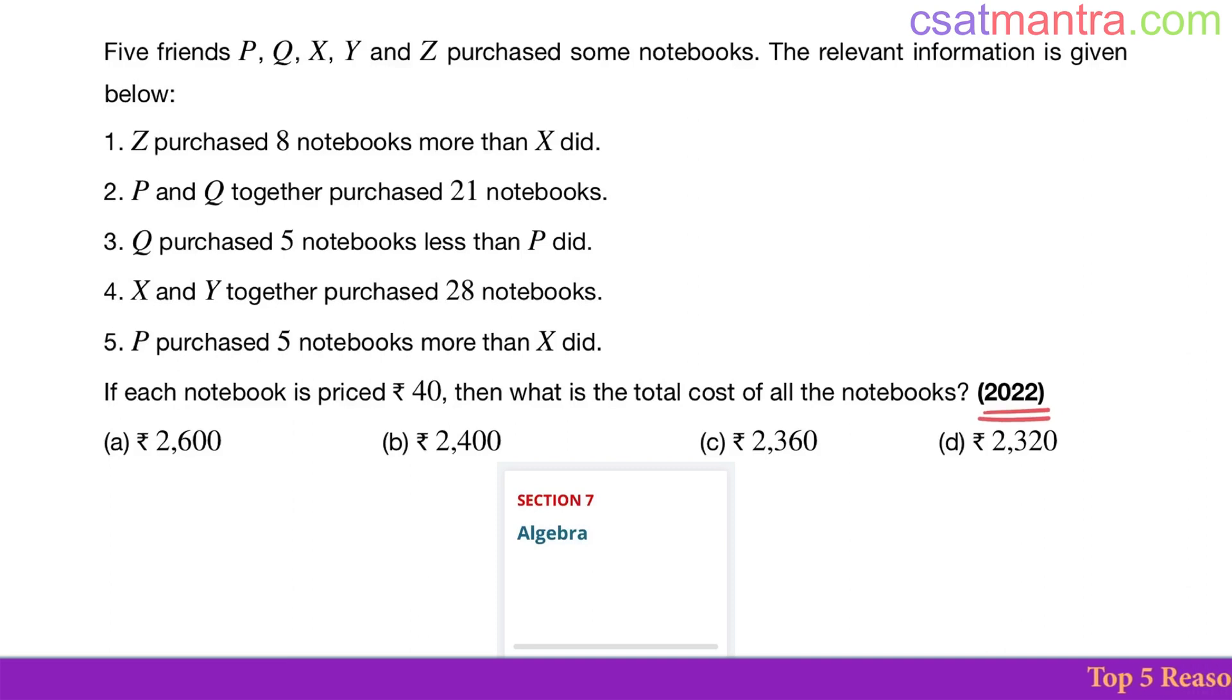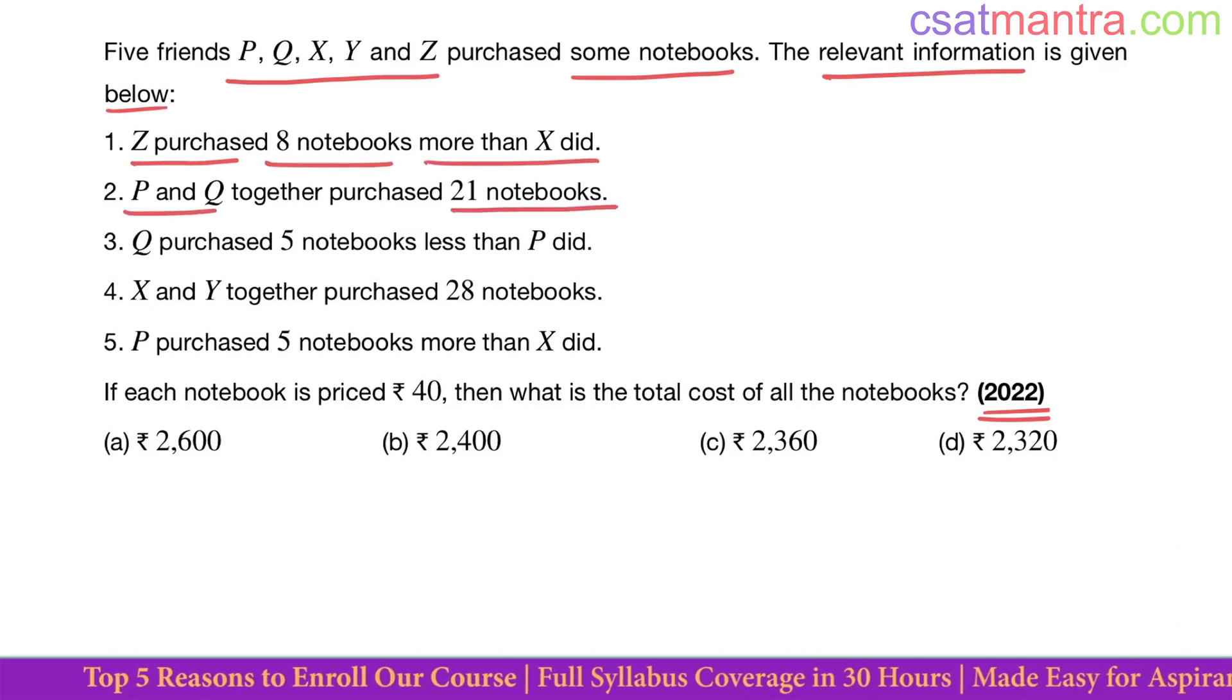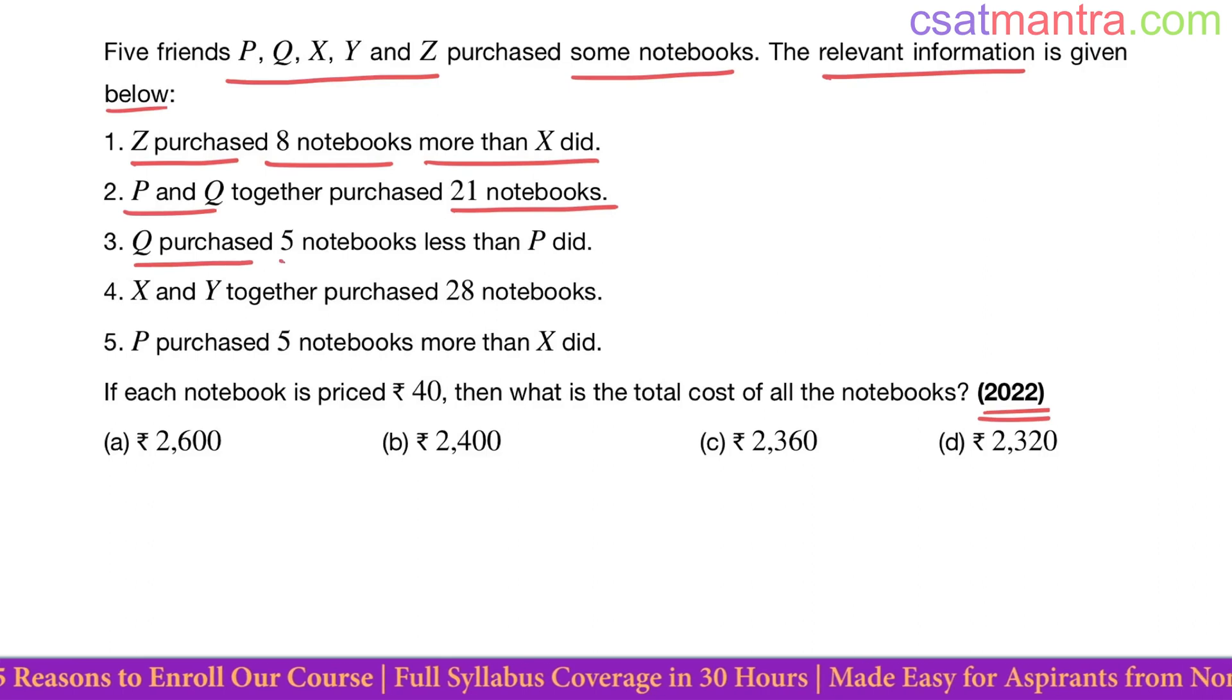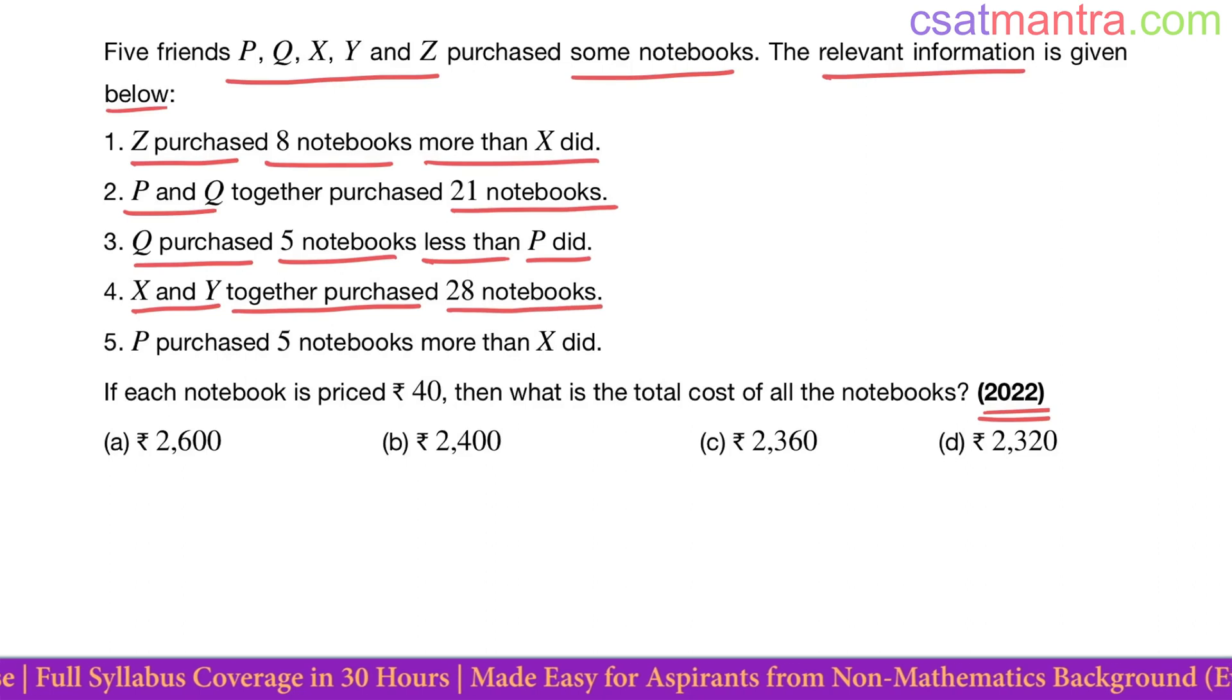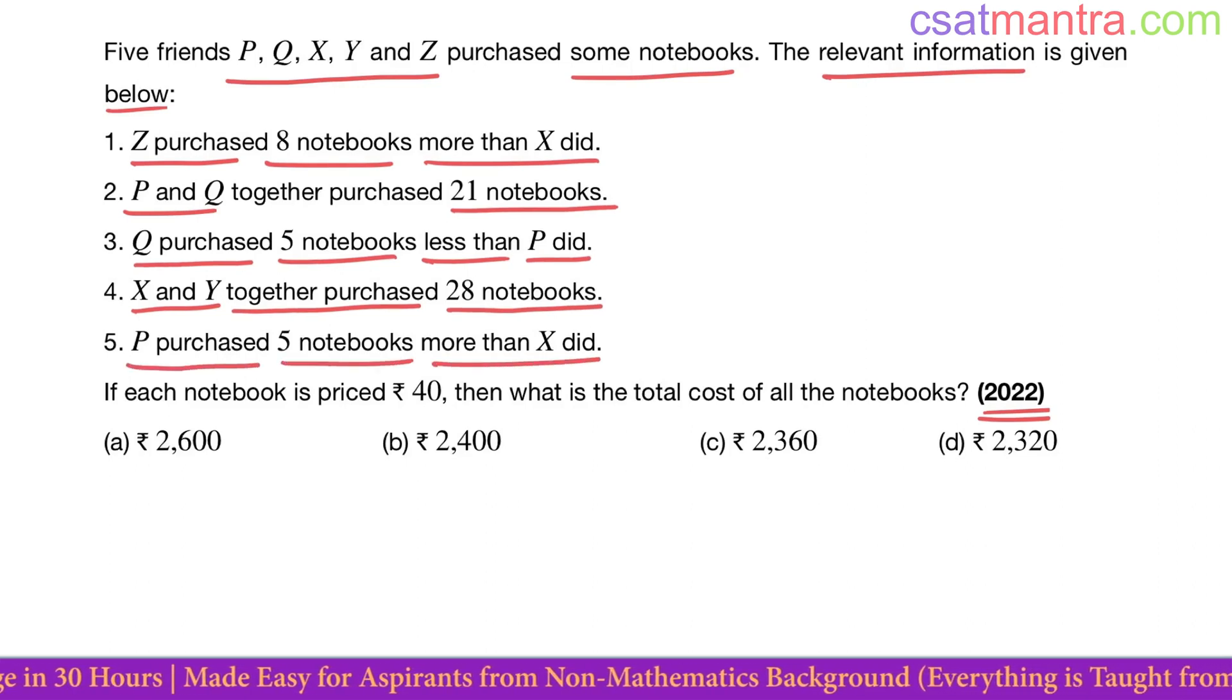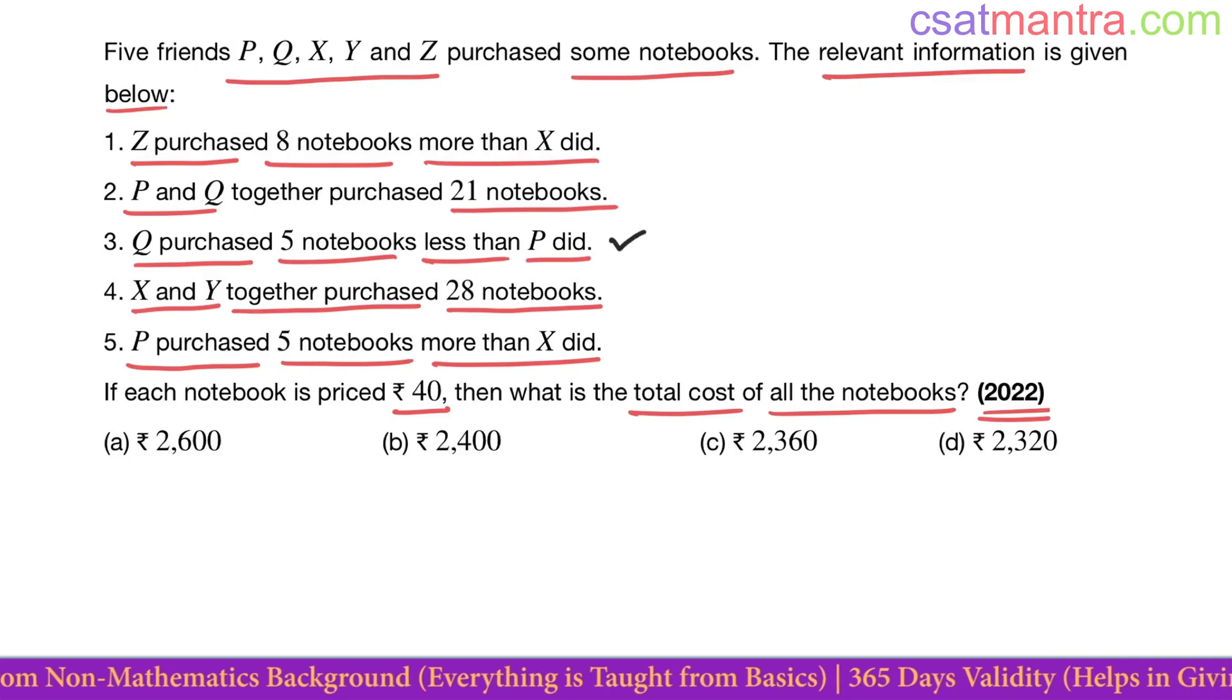2022 question based on algebra. Five friends P, Q, X, Y, and Z purchased some notebooks. The relevant information is given below: Z purchased 8 notebooks more than X did. P and Q together purchased 21 notebooks. Q purchased 5 notebooks less than P did. X and Y together purchased 28 notebooks. P purchased 5 notebooks more than X did. If each notebook is priced 40 rupees, then what is the total cost of all the notebooks?